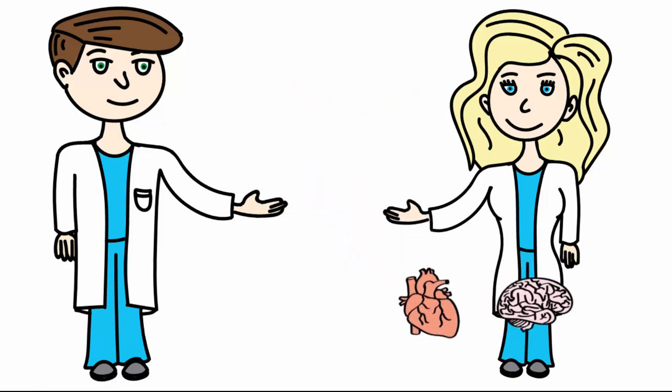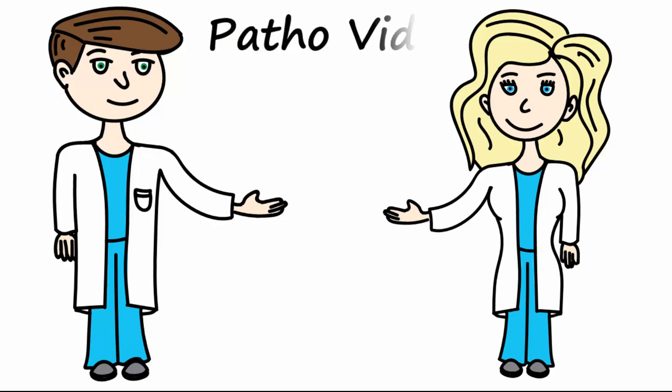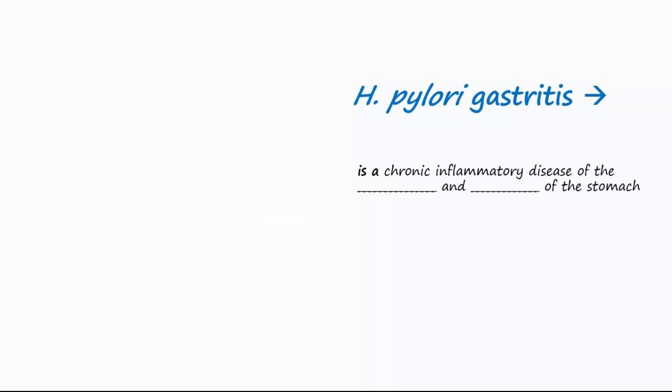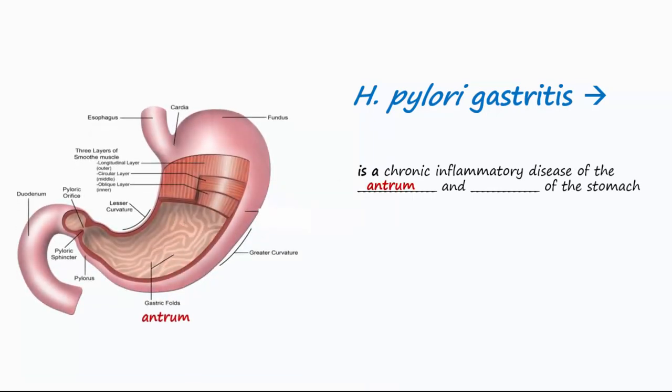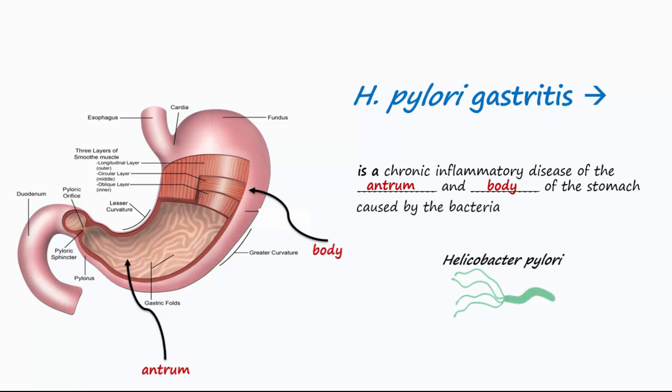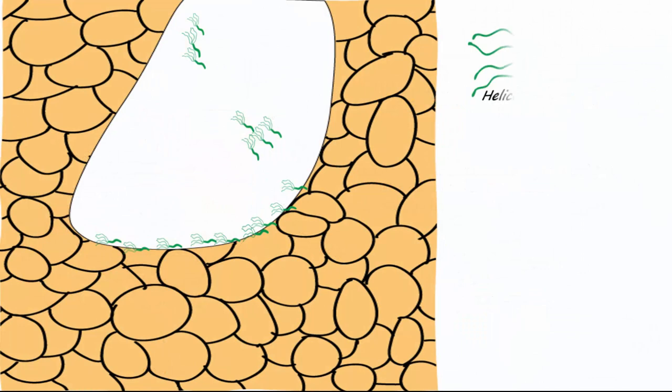Welcome to another patho video. Today let's talk about H. pylori gastritis, a chronic inflammatory disease of the antrum and body of the stomach caused by the bacteria Helicobacter pylori. Helicobacter pylori is a gram-negative rod with four to six flagella.